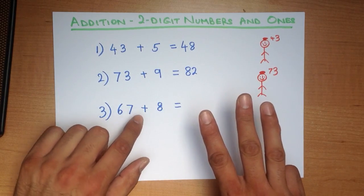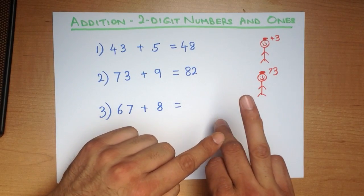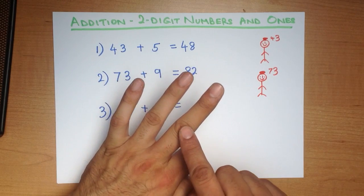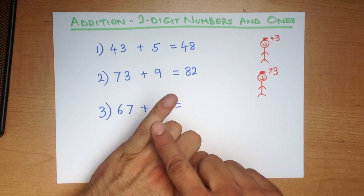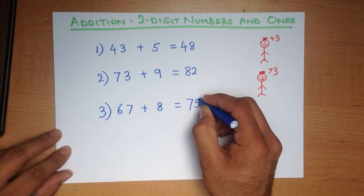67 plus 8. So we've got 67, 68, 69, 70, 71, 72, 73, 74, 75. And that is our answer.